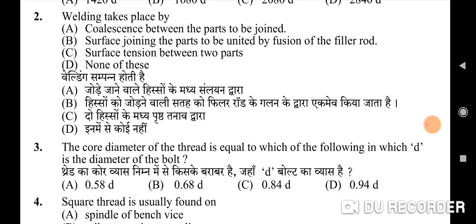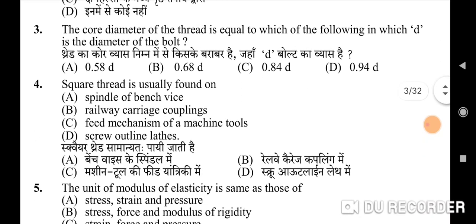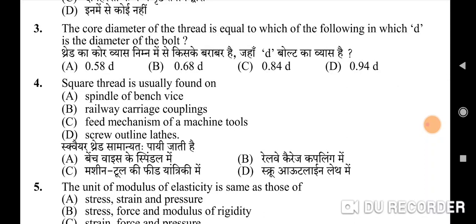Second question: welding takes place by — correct option is A: coalescence between the parts to be joined. Third question: the core diameter of the thread is equal to which of the following, in which d is the diameter of the bolt — correct option is C: 0.84d.